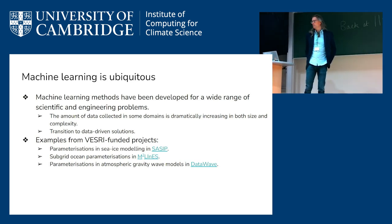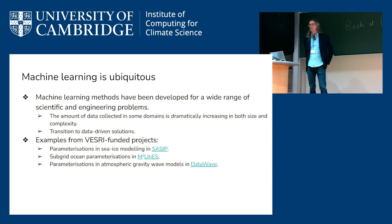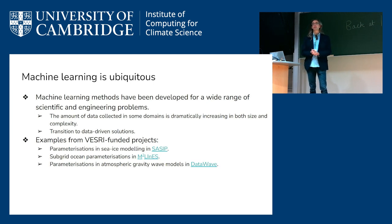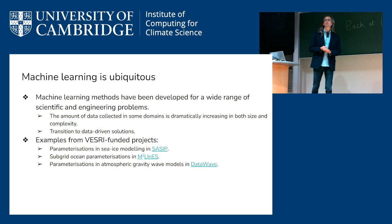We're talking about machine learning coupled to Fortran. Machine learning, as we've seen in quite a few talks today and yesterday, is pretty ubiquitous at the moment. It's spreading into scientific and engineering applications, largely because there are huge amounts of data coming along, models have advanced in sophistication, and the hardware has been available. We've seen examples from VESRI-funded projects — SACIP, M-squared lines, and DataWave — all bringing in machine learning models to replace or help with parameterizations, either existing or data-driven ones.